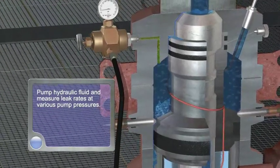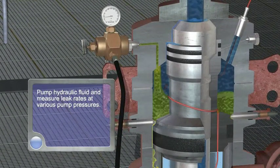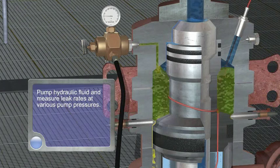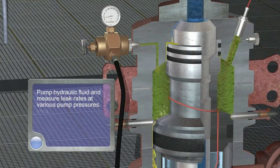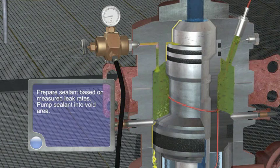Pump hydraulic fluid and measure leak rates at various pump pressures. Prepare sealant based on measured leak rates. Pump sealant into void area.